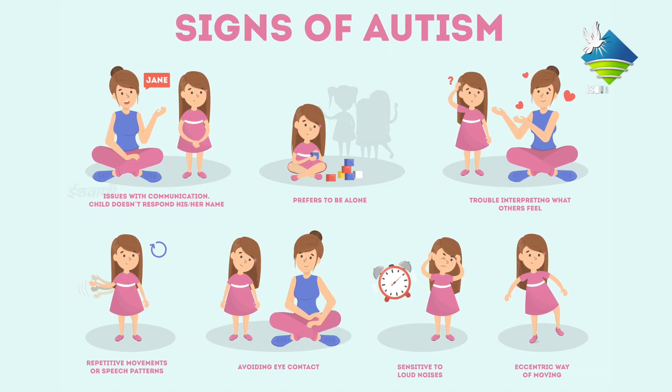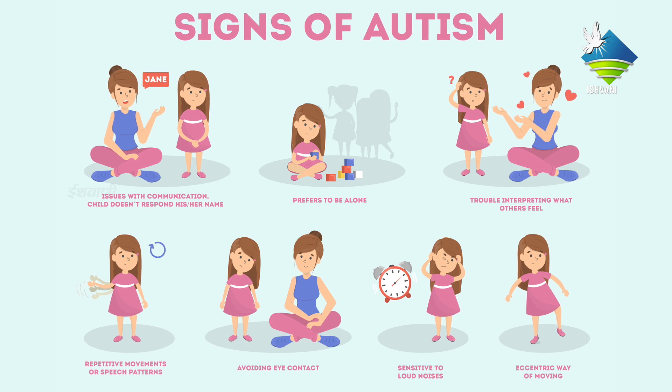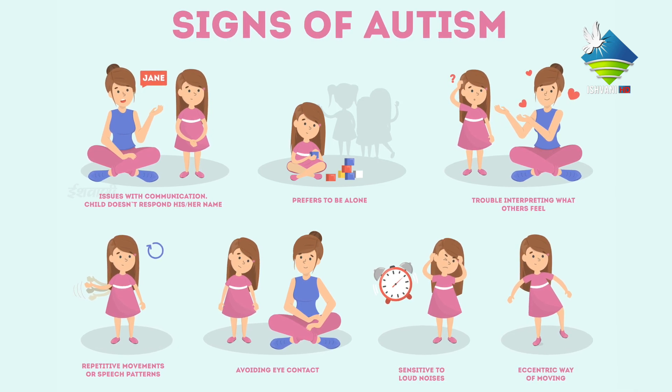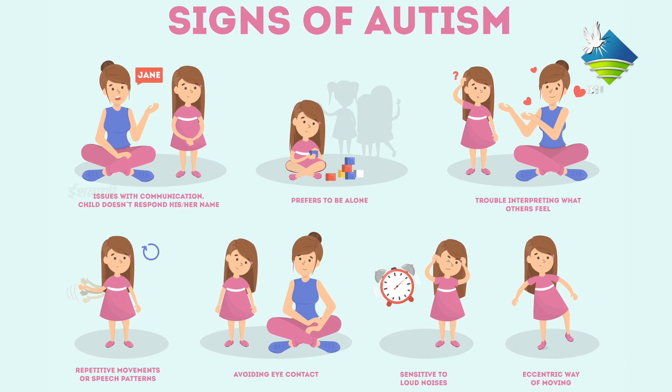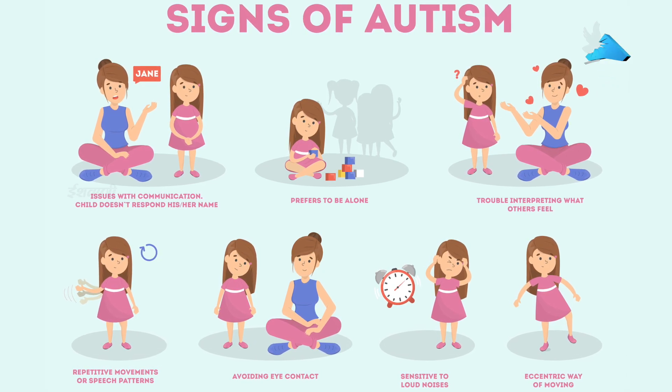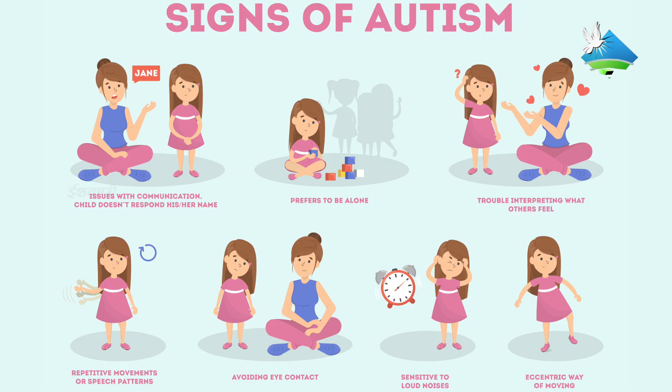They like to sit in a corner. They like to look at lights. They like to raise their hands — flipping of hands. They like to stay alone and prefer watching rather than interacting with other children.